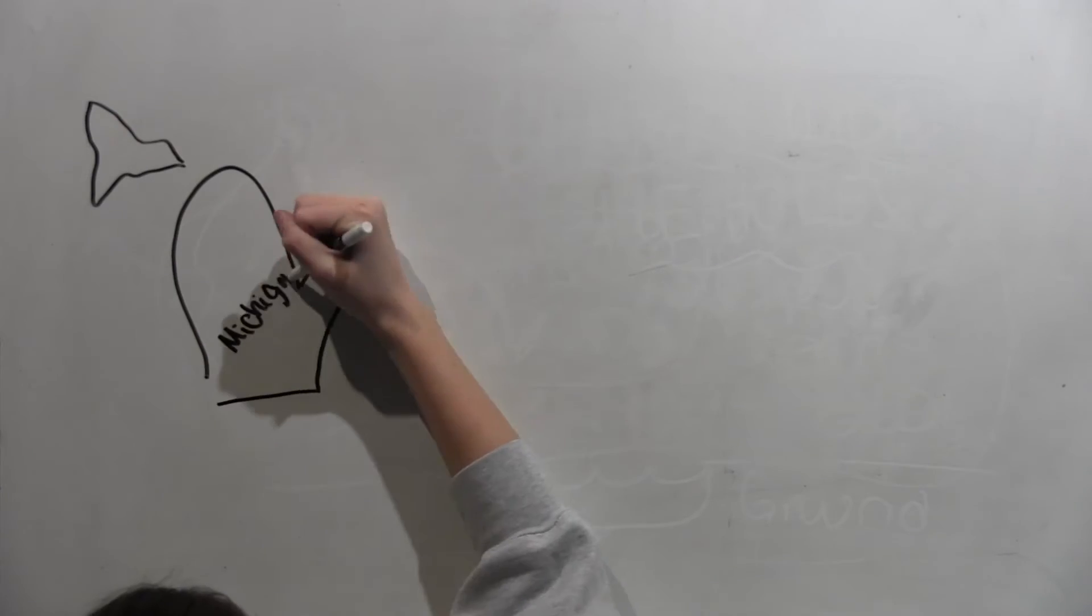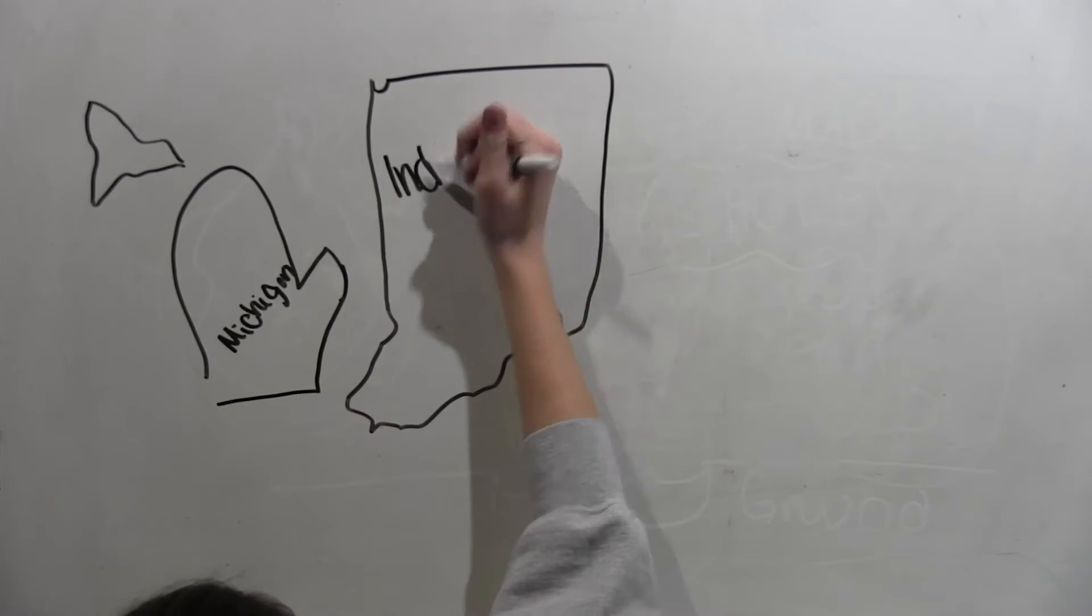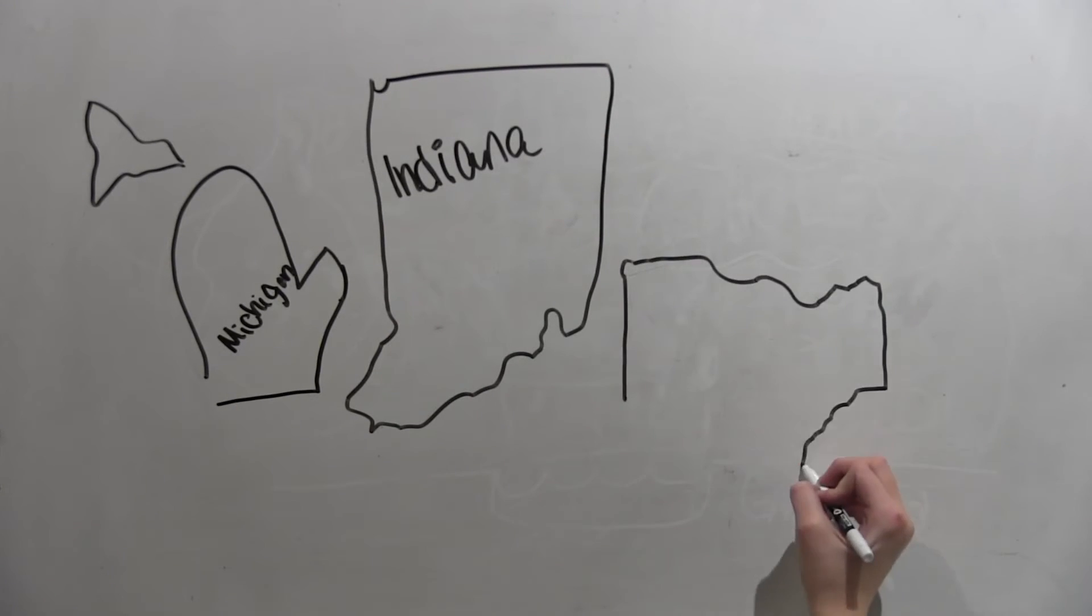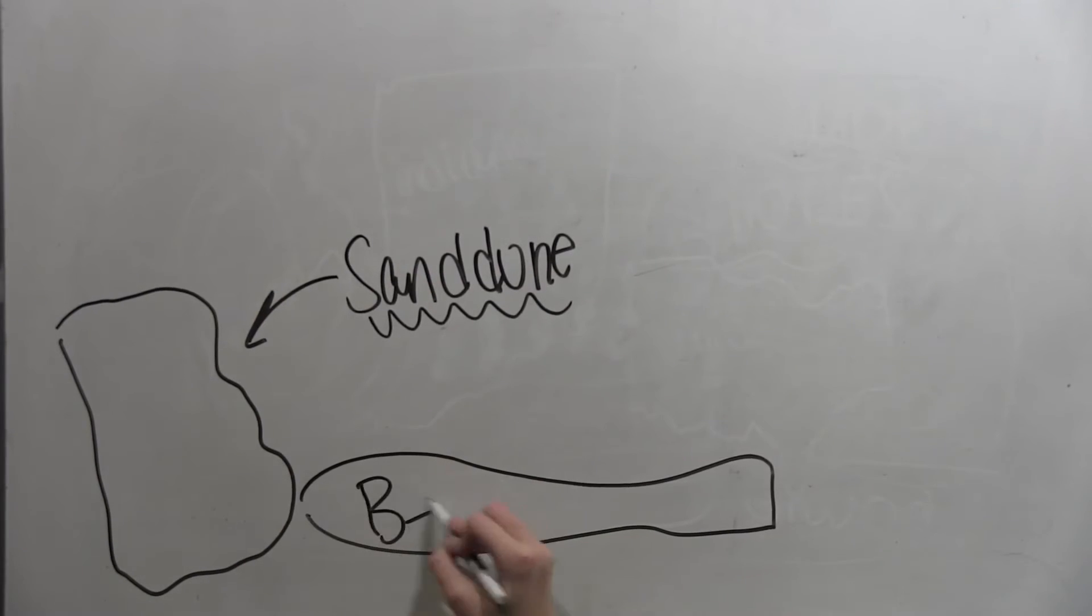The lakes were created by small rocks from Canada that at some point came to Michigan, Indiana, and Ohio. These rocks formed the sand dunes, beaches, and wetlands that we have today.